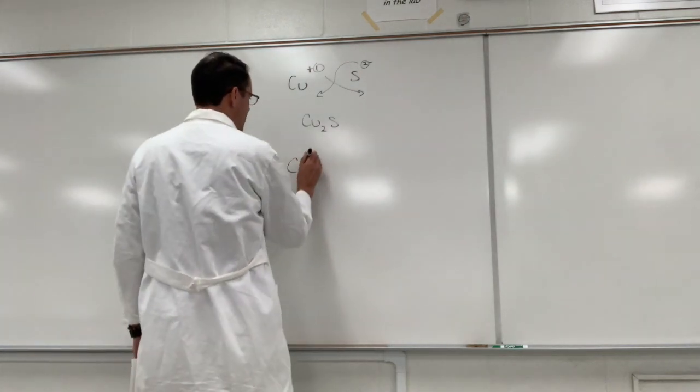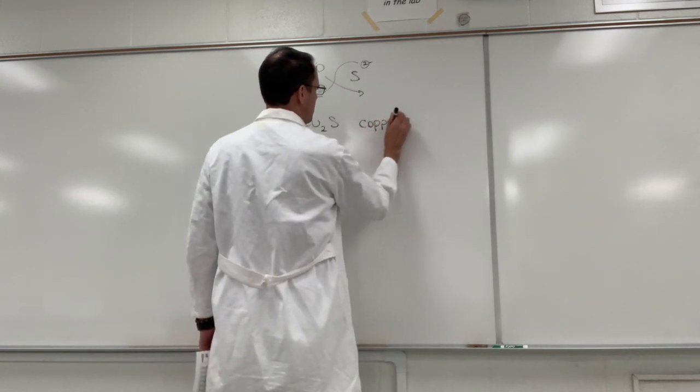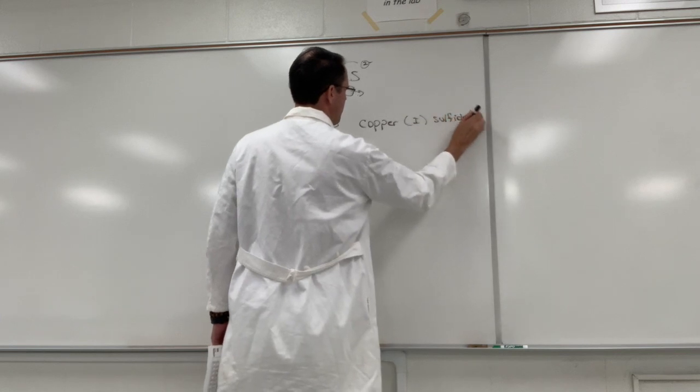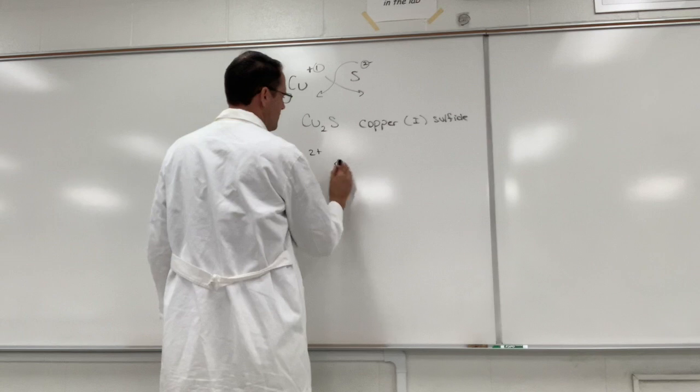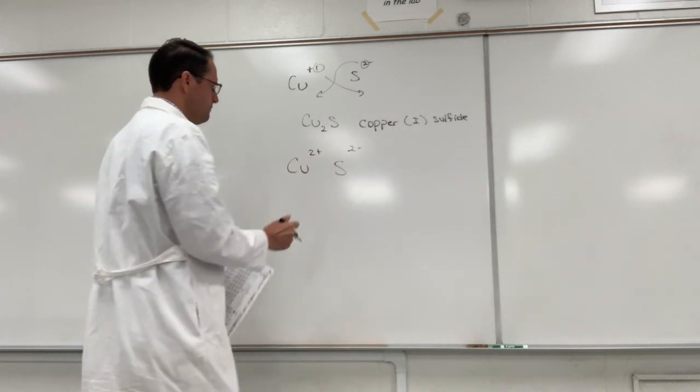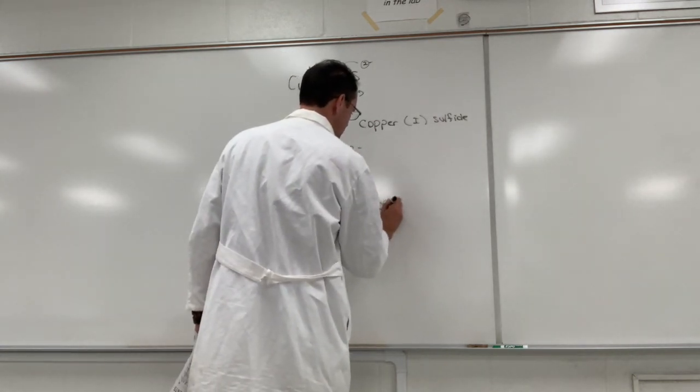However if copper(II) sulfide forms, the copper is going to be in the plus 2 oxidation state and sulfur is going to be minus 2, so we don't have to crisscross here. We know one of each is going to come together, so that's going to be CuS, copper(II) sulfide.